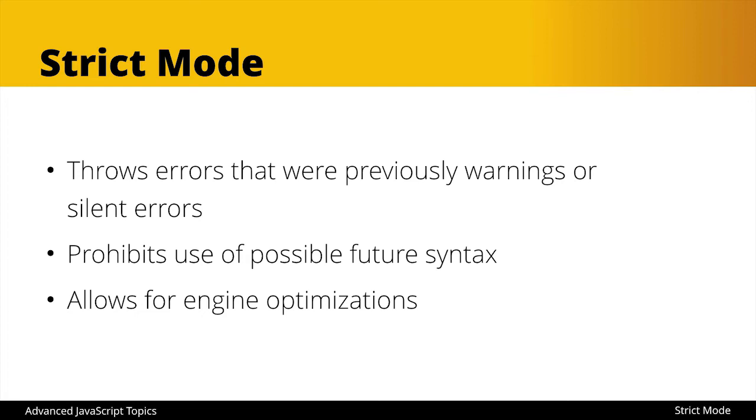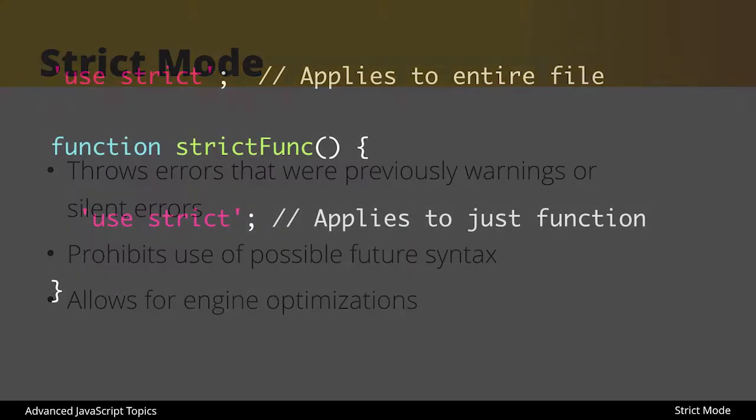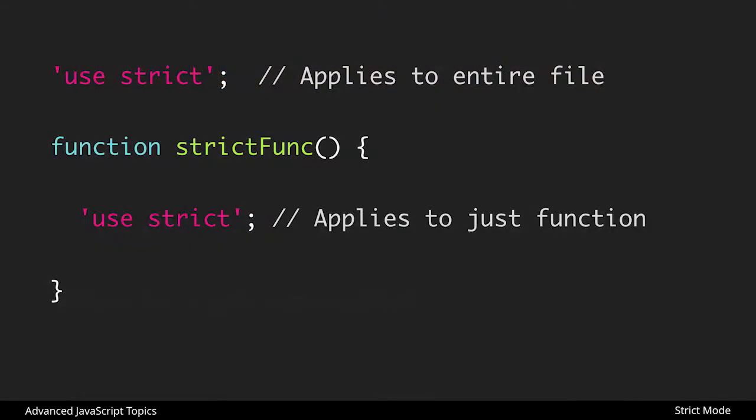Now to apply strict mode to our code, there are two different ways. The first is at the very first line of our JavaScript file we could write 'use strict' in quotations, and that will apply to the entire file. So everything that comes after that point will be operating in strict mode. We could also do this at the function level — because of how scope works in JavaScript, which we'll explore more in this section, we can apply 'use strict' to just a particular function.